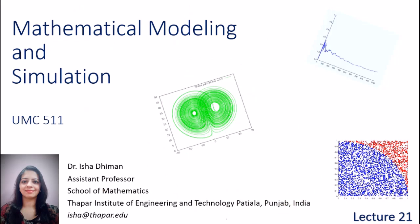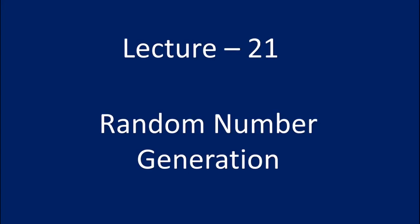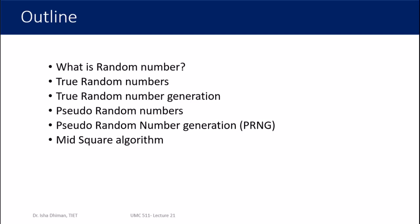Welcome to lecture 21 of Mathematical Modeling and Simulation. In this lecture we are going to look at random number generation. I'll be talking about what is a random number, what are true random numbers, how to generate true random numbers, what is a pseudo random number, what is a pseudo random number generation algorithm — in short called PRNG — and then we'll talk about a specific technique called the mid-square algorithm.